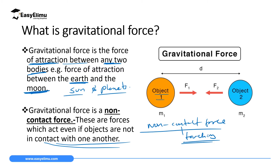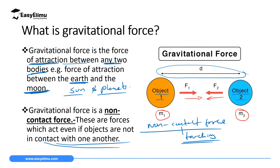As you can see on the screen, we have two bodies — object one and object two — at a distance from each other, represented by d. These two bodies have specific masses: the first has mass m1 and the second has mass m2. There is a force of attraction between them, and this force will depend on two things: the mass of the objects and the distance between them.